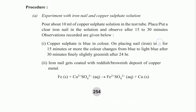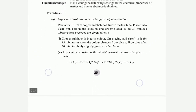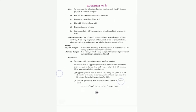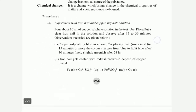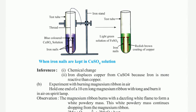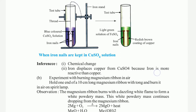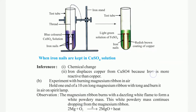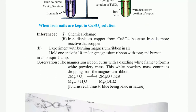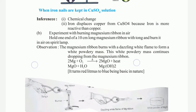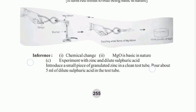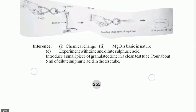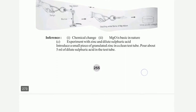When iron nails are kept in CuSO₄ solution, a chemical change takes place. Second reaction: experiment with zinc and dilute sulfuric acid. There is an observation and a diagram.